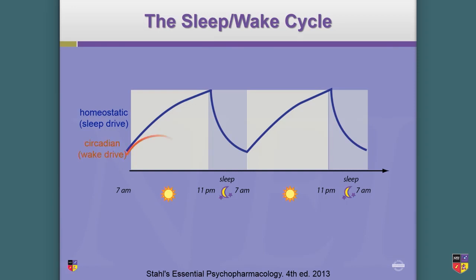When you go to sleep, the sleep drive drops down because your adenosine is being pushed back into ATP for tomorrow morning. So at night, you go to sleep and then you replenish.